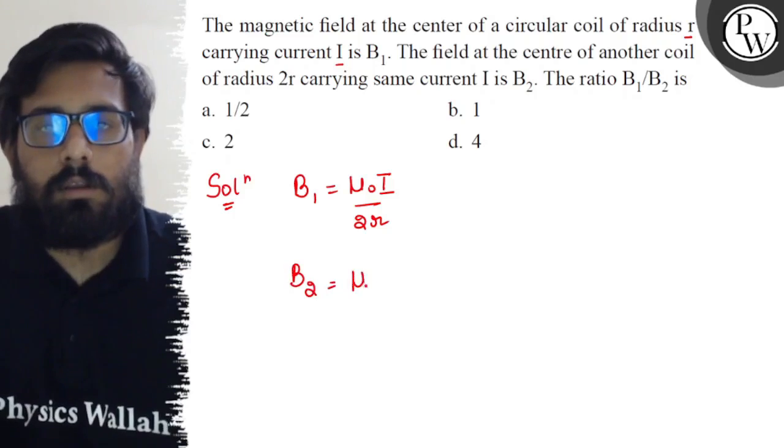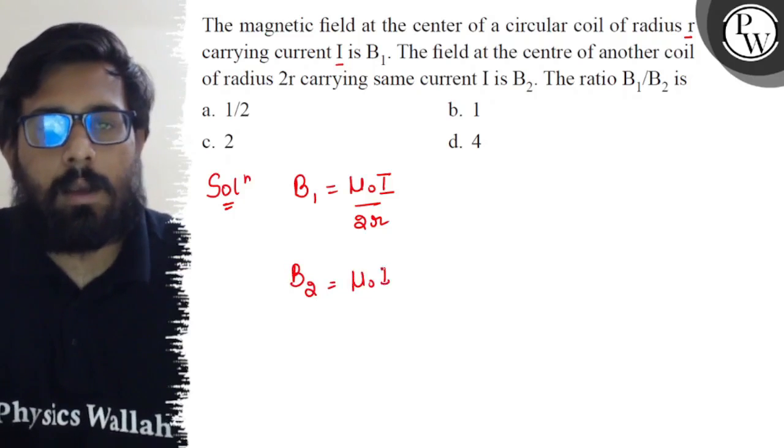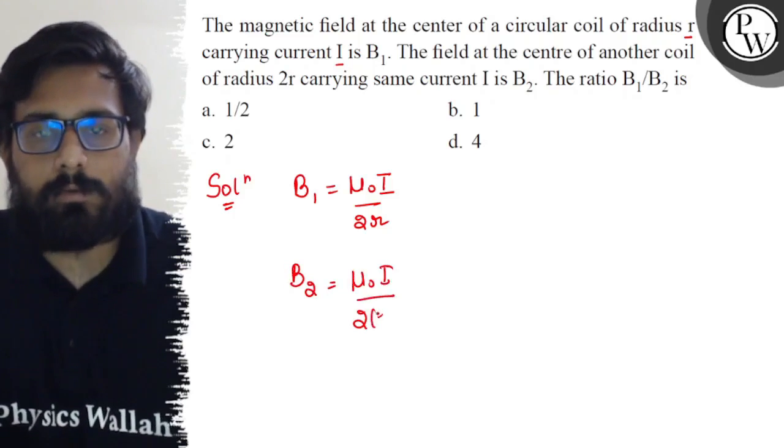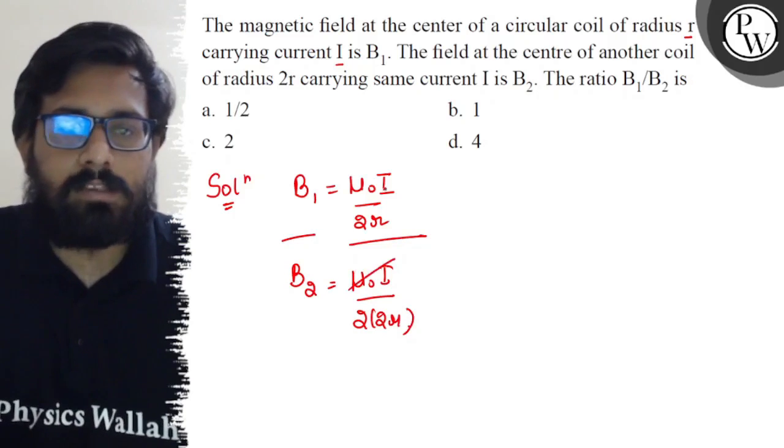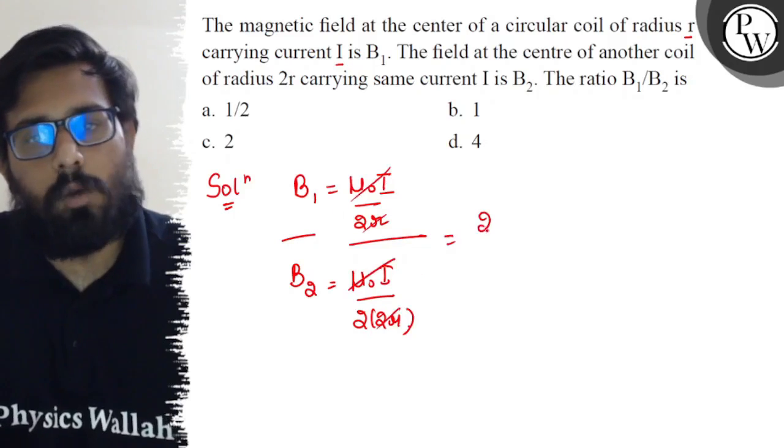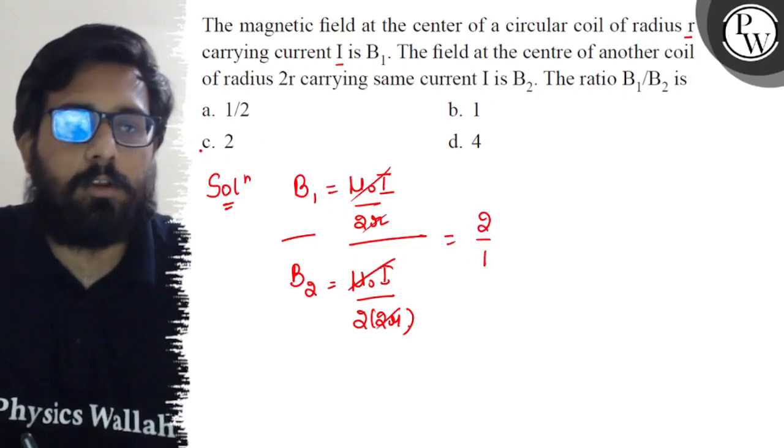μ₀I upon 2 into 2r. So taking their ratios, μ₀ is μ₀, I cancels, 2r cancels, it comes to be 2 upon 1. So your option C is absolutely correct.